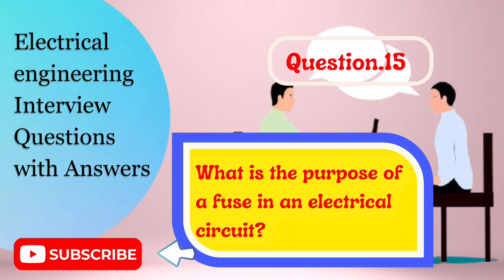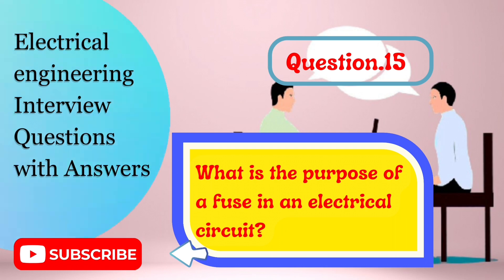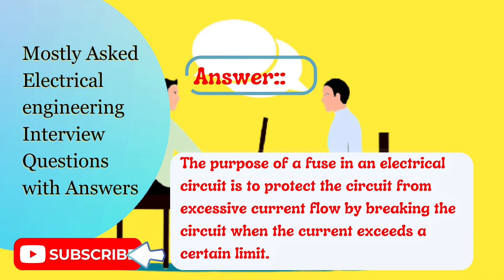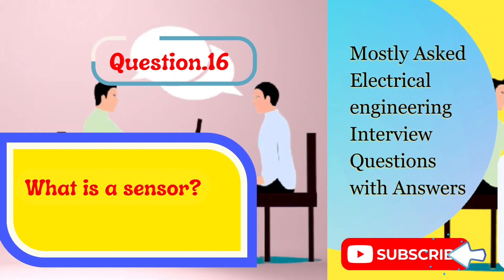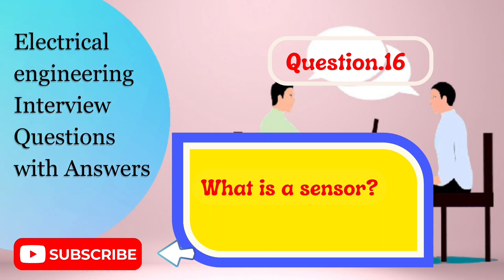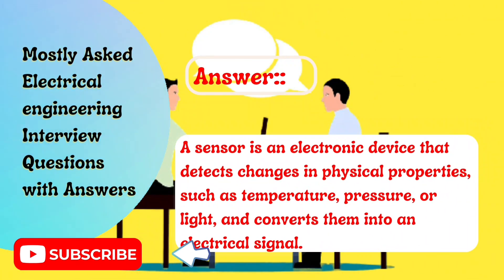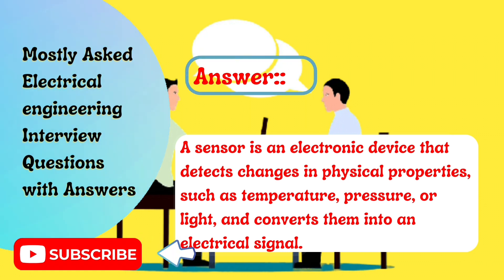Question 15: What is the purpose of a fuse in an electrical circuit? The purpose of a fuse in an electrical circuit is to protect the circuit from excessive current flow by breaking the circuit when the current exceeds a certain limit. Question 16: What is a sensor? A sensor is an electronic device that detects changes in physical properties, such as temperature, pressure, or light, and converts them into an electrical signal.